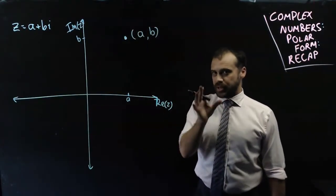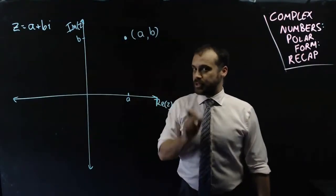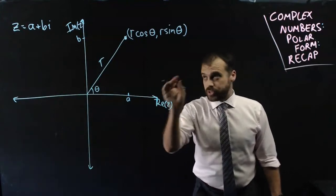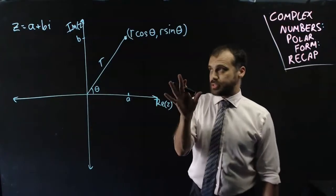But knowing what we know about sine rule, cosine rule, unit circles, that kind of thing, we can express that a little bit differently. We can express those coordinates as r cos theta, r sine theta. That should look really familiar at this point.